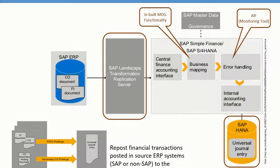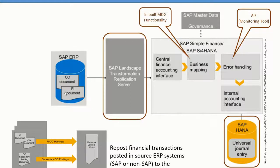This is done using business mapping and SAP Landscape Transformation (SLT) service. You have your source SAP system — or more than one system — and you use SLT, which is SAP Landscape Transformation Replication Service, that will trigger events the moment you post documents into your source system. Those events will trigger the transactions in the tables to move to the central finance system.